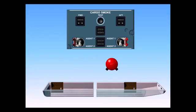When either the forward or aft switch is toggled downward to the agent two position, the respective squib on bottle number two is triggered and the halon enters the respective compartment.